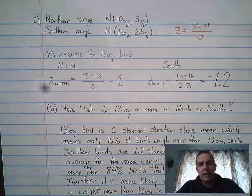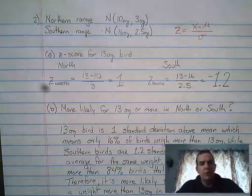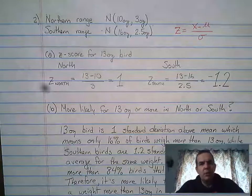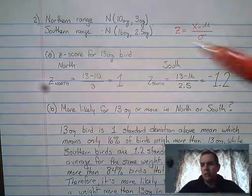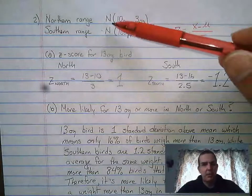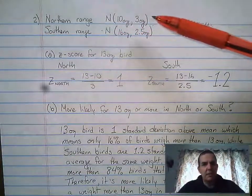The question asks about the distribution of weights of birds in the northern range and in the southern range. They describe the birds in the northern range as approximately normally distributed with a mean of 10 ounces and a